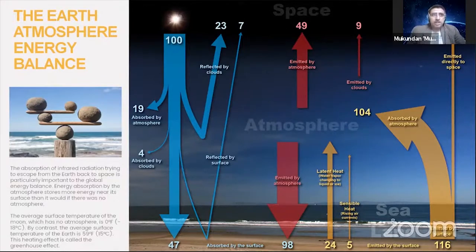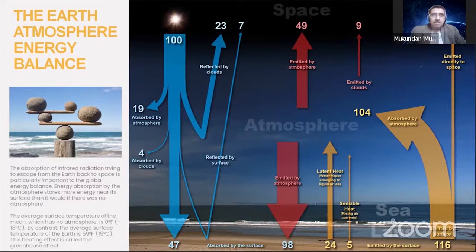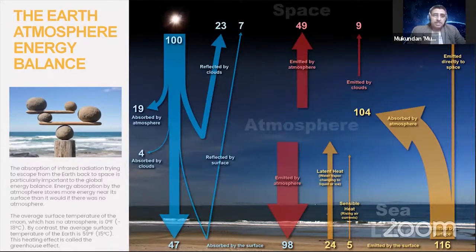If you look at the absorption of infrared radiation trying to escape from the Earth back to space, you have input energy coming in from space — let's say that's at 100. 19% is absorbed by the atmosphere, 4% by the clouds, and 47% absorbed by the ground. The Earth also radiates more heat than what's coming in from the Sun, which maintains Earth at 15 degrees C rather than 0 degrees F like the Moon, because of the greenhouse effect.